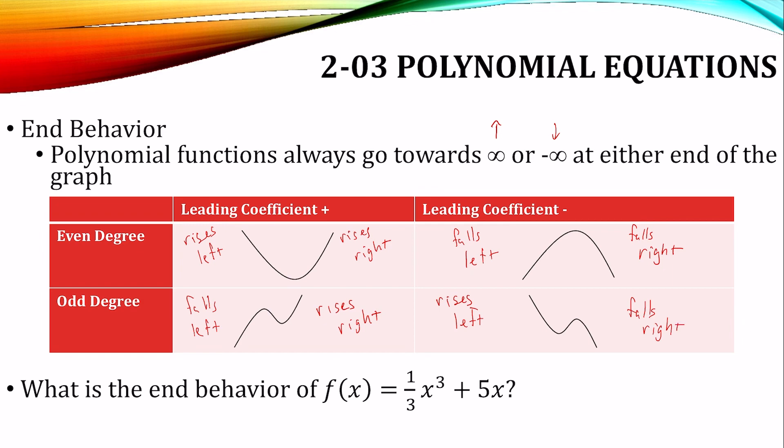Alright, so we look at this one. We need to know our degree. Our degree is 3, so it is an odd degree. And this is the leading coefficient. So that's a positive leading coefficient.